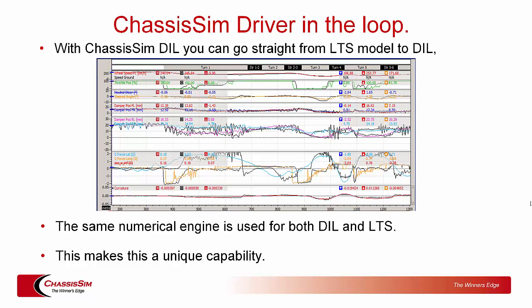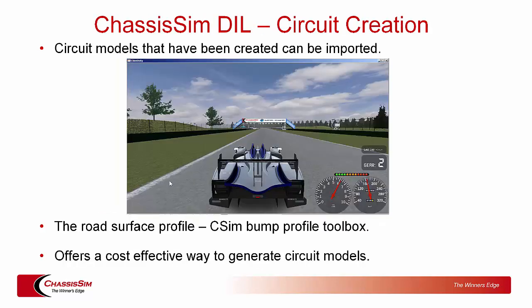What makes ChassisSim Driver in the Loop unique is that the lap time simulation, track replay, shaker rig, and driver in the loop all use the same numerical engine. This makes it a unique capability, which is why you can get correlation like this — the colored trace is lap time simulation and the black is driver in the loop. You can see speed, throttle, steered angle, front dampers, rear dampers, lateral g, and inline g. While it's obviously not a perfect match — computer versus human — all the major points are captured. This is the big thing ChassisSim Driver in the Loop brings to the party.